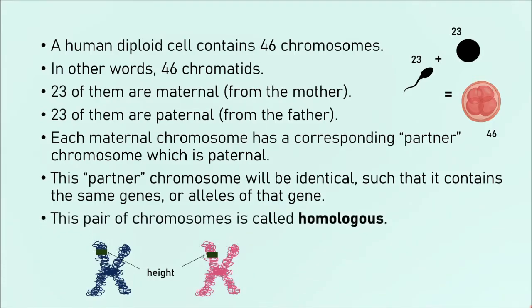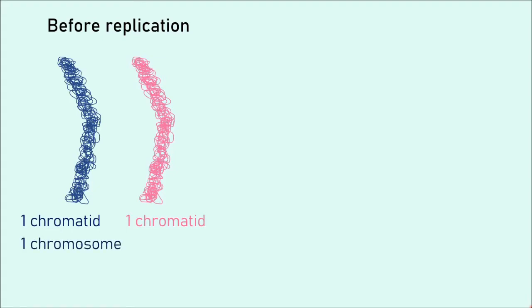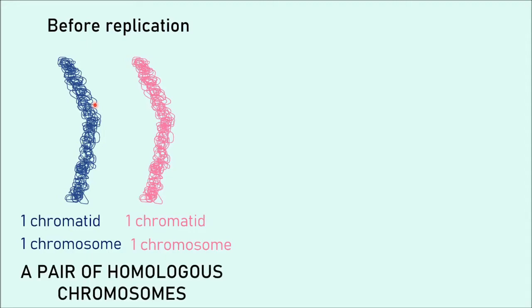Homologous chromosomes are two chromosomes that are exactly identical because they carry the same genes, even if the alleles are different. Before replication, we have 23 from the father and 23 from the mother — 46 in total. Each is one chromatid and one chromosome. Because these two chromosomes have the gene for height in the same position and no other chromosomes have that gene, we call them homologous — a pair of homologous chromosomes.